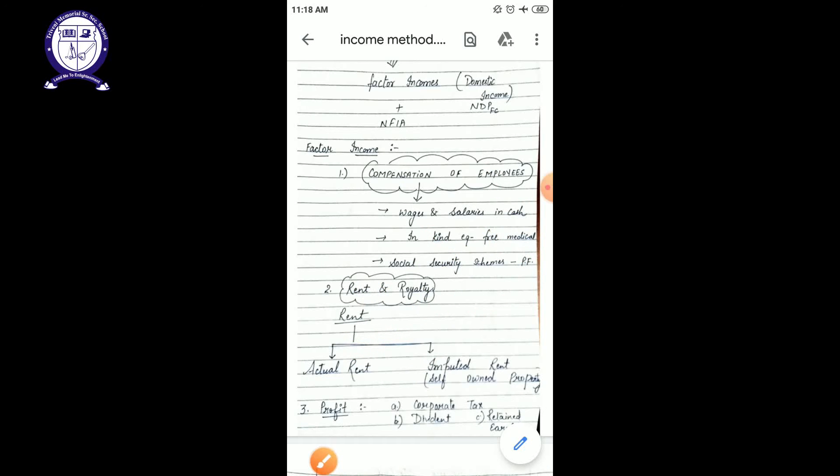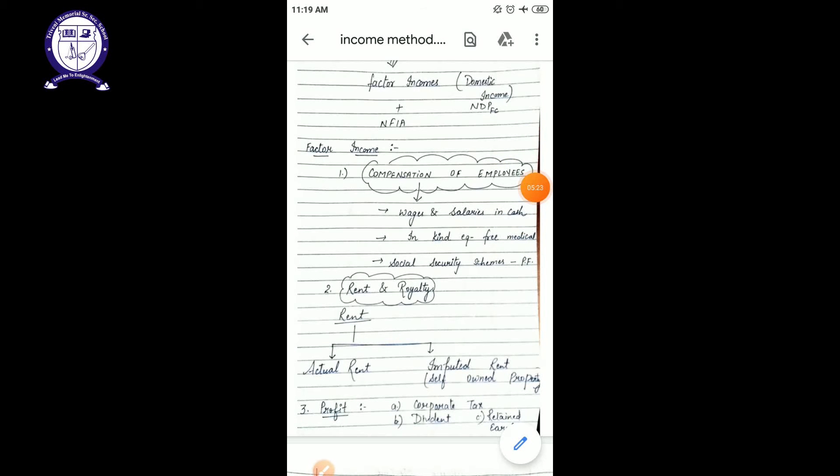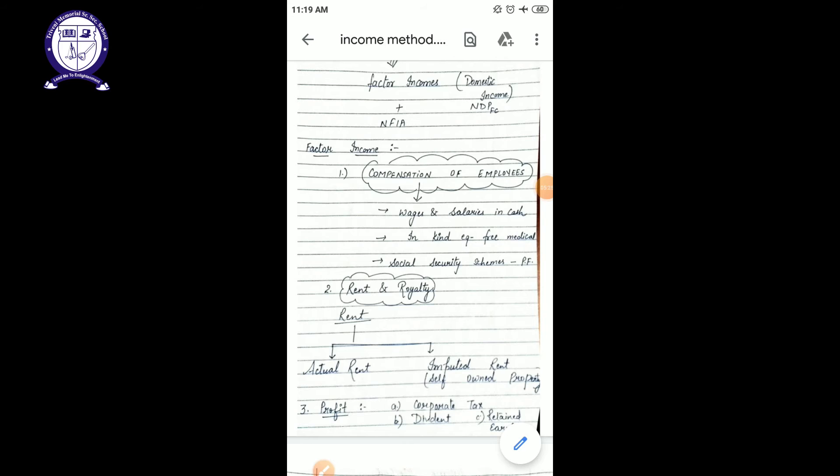Retained earning means the earning which is kept aside so that we can use it in your future. Future purpose is for some expansion purpose or for some unconditional or some uncertain activities.